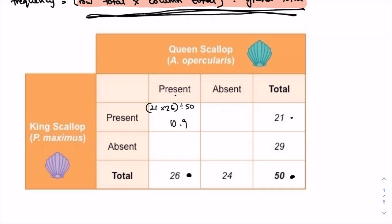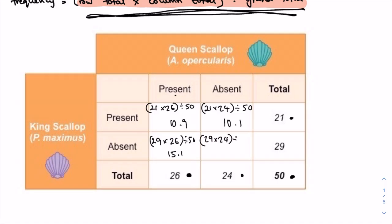For the quadrats where the queen scallop was absent but the king scallop was present, we do 21 times 24 divided by 50, which gives 10.1. For the quadrats where the queen scallop was present but the king scallop was absent, this would be 29 times 26 divided by 50, which is 15.1. And when both species are absent, the expected frequency value is 29 times 24 divided by 50, which is 13.9.